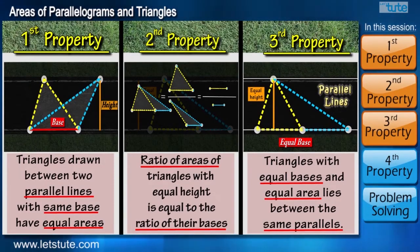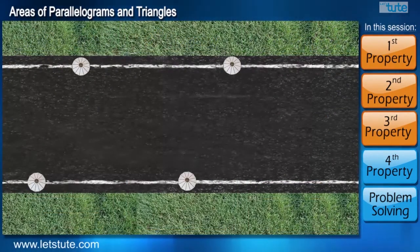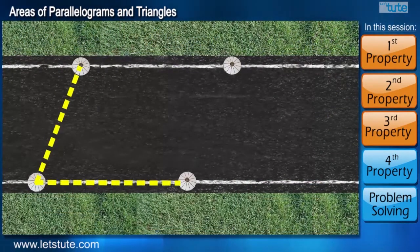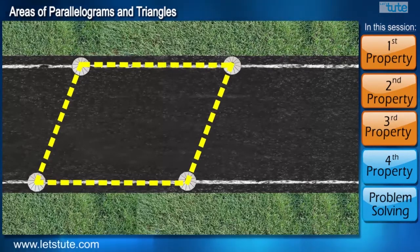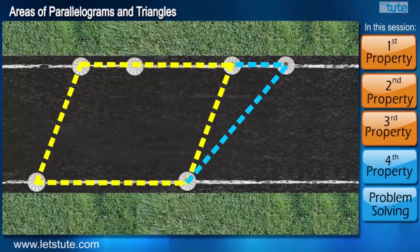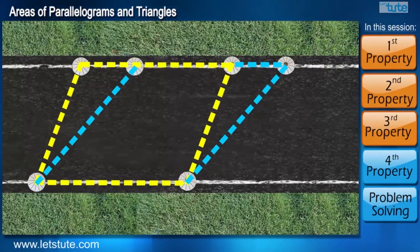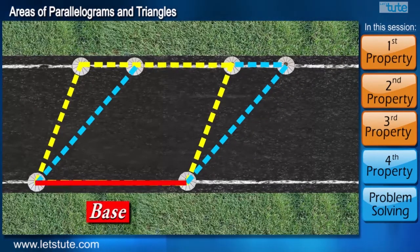Here we move to one and the last property of this session based on parallelograms. Now if we look at the same street lights arrangement, we can make a parallelogram out of it. Now suppose if we add two more street lights on the top. Then we can see that we have two different parallelograms but with the same base.